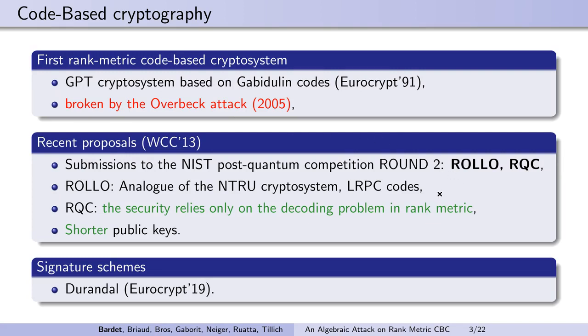ROLLO relies on LRPC codes, like LDPC codes in Hamming metric, and can be seen as an analogue of the lattice-based cryptosystem NTRU. It has been shown that the security of RQC relies only on the decoding problem in rank metric. The advantage of these schemes is that their structure allows for smaller public keys than other proposals in the Hamming metric.